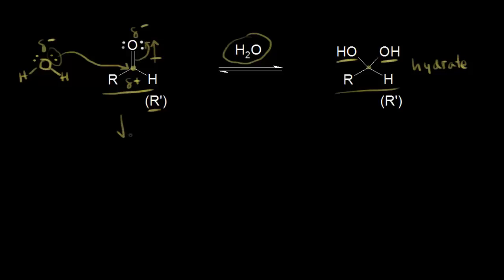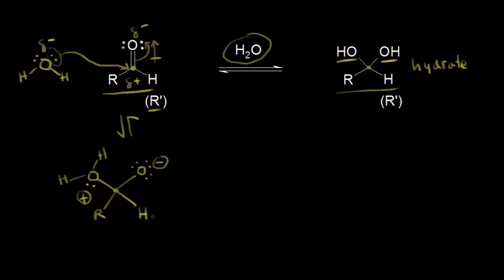Let's draw the result of our nucleophilic attack. We now have our oxygen bonded to this carbon, and this oxygen still has two hydrogens bonded to it. There's still a lone pair of electrons on that oxygen, which gives it a plus-one formal charge. This carbon is bonded to another oxygen, which had two lone pairs of electrons and now picked up another one — giving a negative-one formal charge on that oxygen — with an R group and a hydrogen. One lone pair on the oxygen formed a bond with our carbon, and the pi electrons kicked off onto the oxygen. We get this as our intermediate.